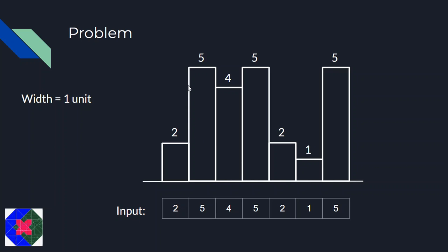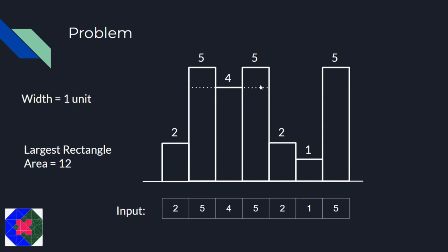One rectangle could have 3 bars, a height of 4, so its area is 12. Another rectangle could have 5 bars and a height of 2, so 5 into 2 is 10. Another rectangle spanning all 7 bars with height 1 gives area 7. You have to find the largest rectangle, which is the one with area 12.